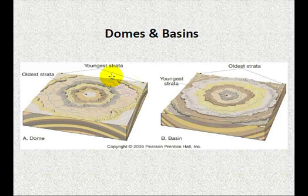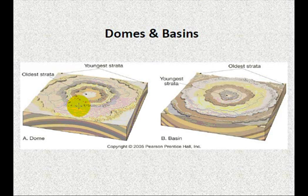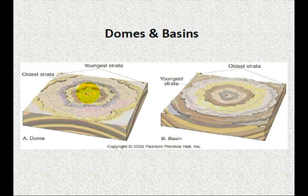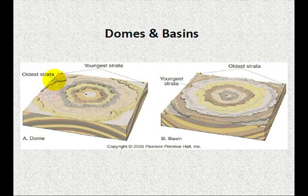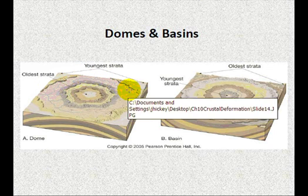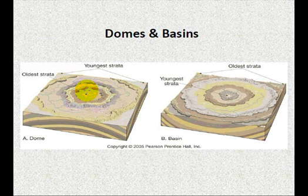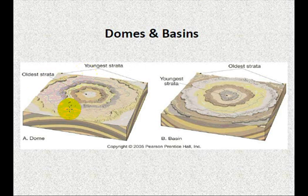A circular hill-type structure is referred to as a dome. You have all these little strike-and-dip symbols, and they're basically pointing away — at least the dips are — from the center of your dome feature. So if this thing hadn't been eroded away, the dome would come up over like this. Your oldest rocks would be here in the middle.